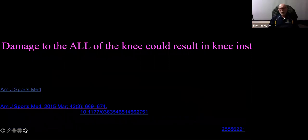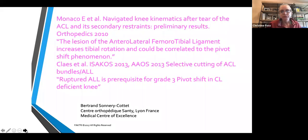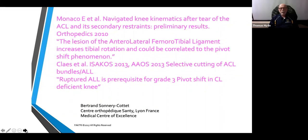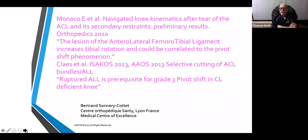This article from the American Journal of Sports Medicine is included as another source for reading. Regarding the kinematics of the knee, preliminary results reported in 2020 show that the anterolateral ligament increases tibial rotation and could be correlated to the pivot shift phenomenon. Furthermore, a ruptured ALL is a prerequisite for a grade 3 pivot shift, so you may get a positive pivot shift in an ACL-deficient knee if the ALL is also torn.